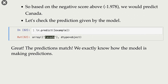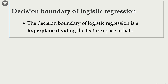We exactly know how the model is calculating predictions. The decision boundary of logistic regression is a hyperplane dividing the feature space in half. If you have two features, your decision boundary is a one-dimensional line. If you have three features, it's a two-dimensional plane. If you have D features, your decision boundary is a D-1 dimensional hyperplane.